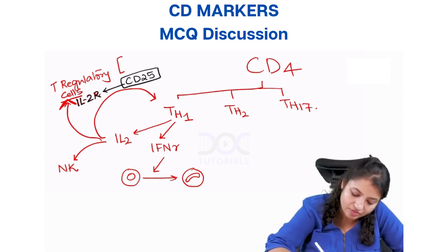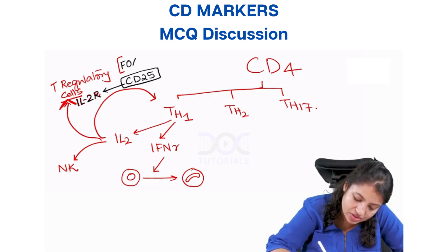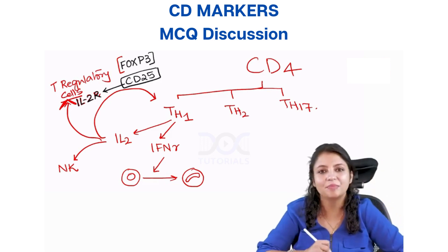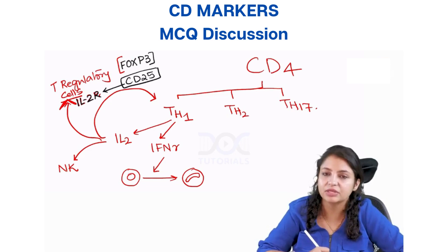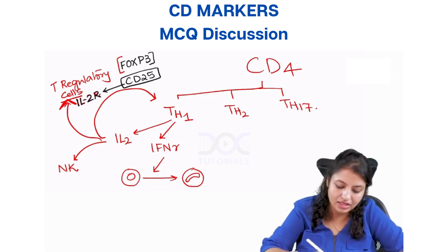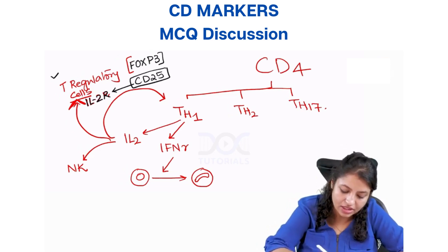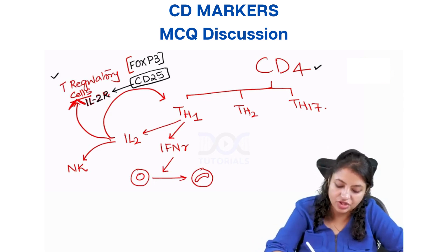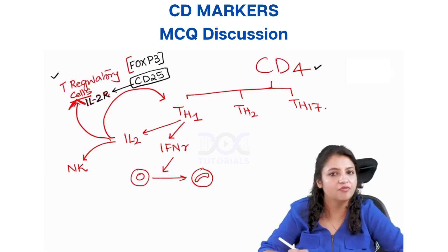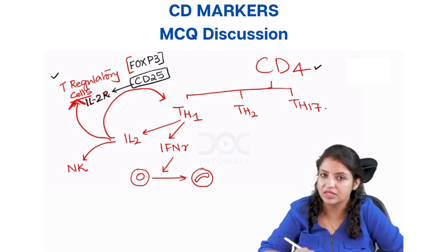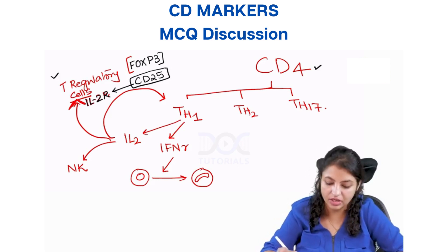Apart from that, the unique marker which is present on regulatory T cells is FOXP3. So another marker present here is FOXP3. Therefore, regulatory T cells are CD4 positive cells which express CD25 and FOXP3, and they are the subset of T cells which suppress the immunity.